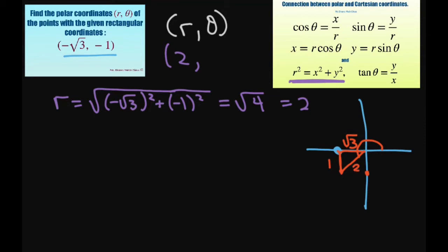So if you want, you can use cosine of theta equals x over r, which is negative square root of 3 divided by 2.